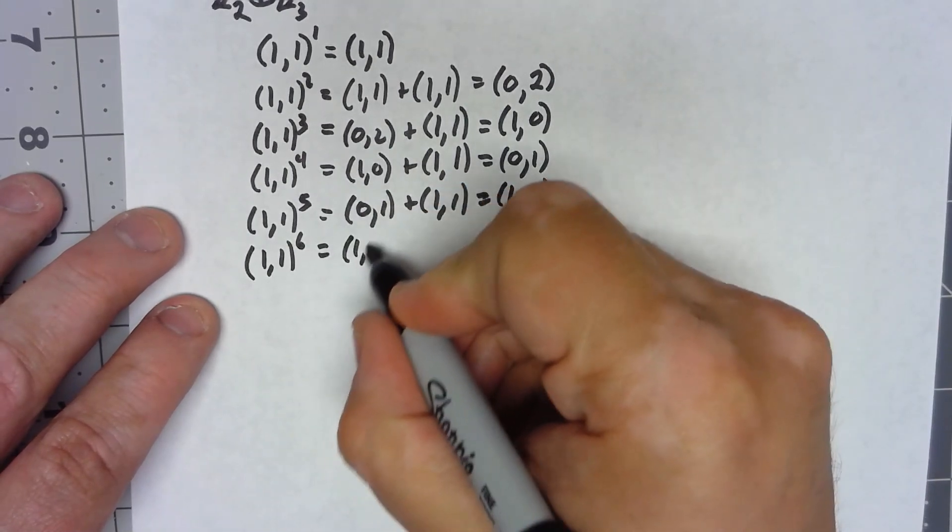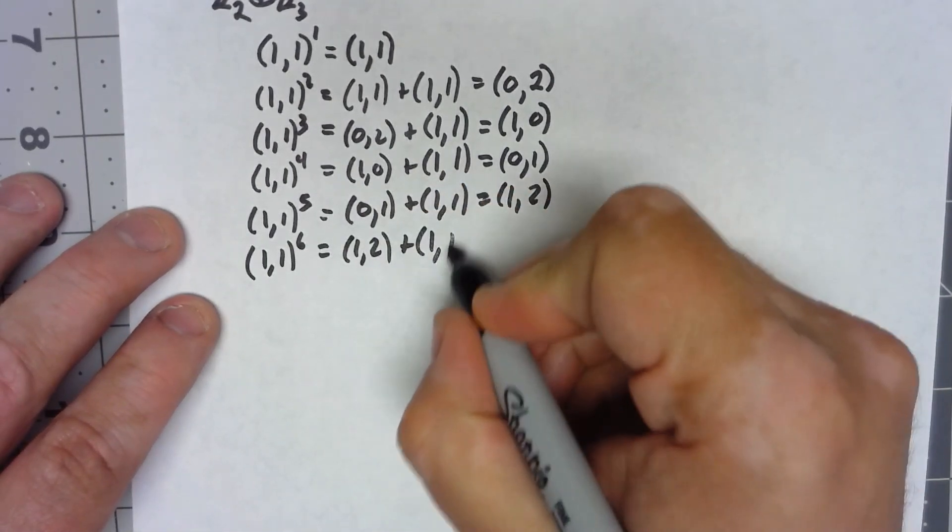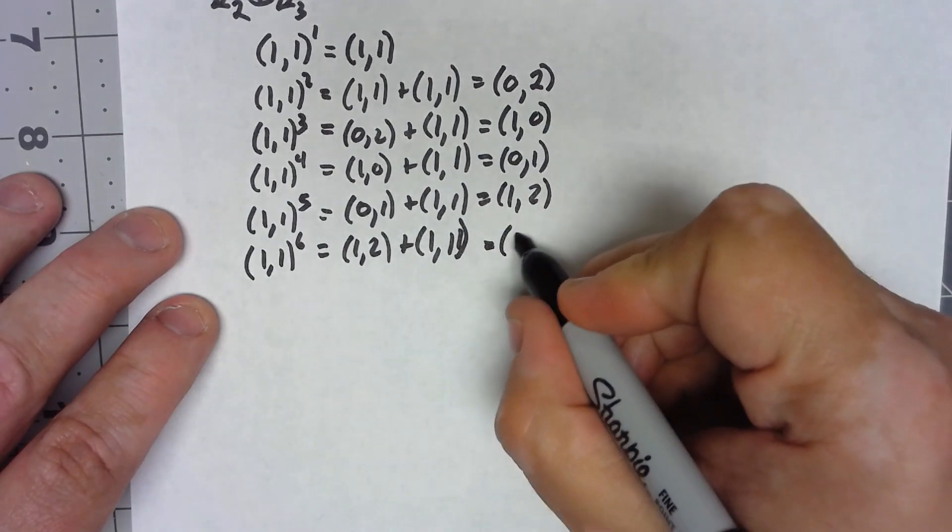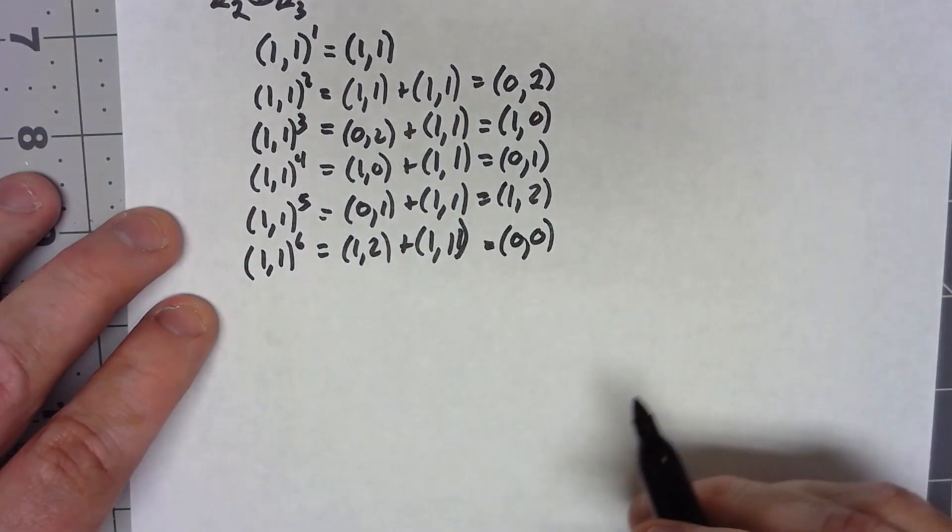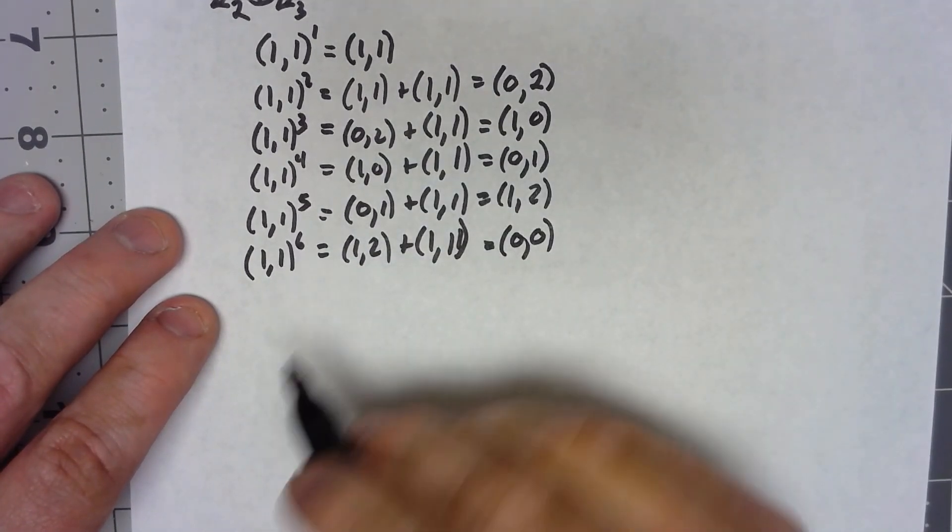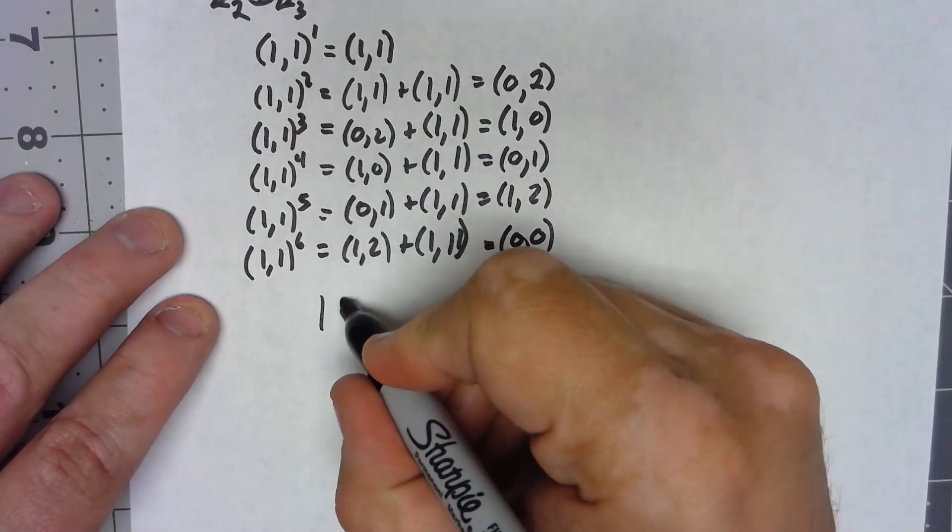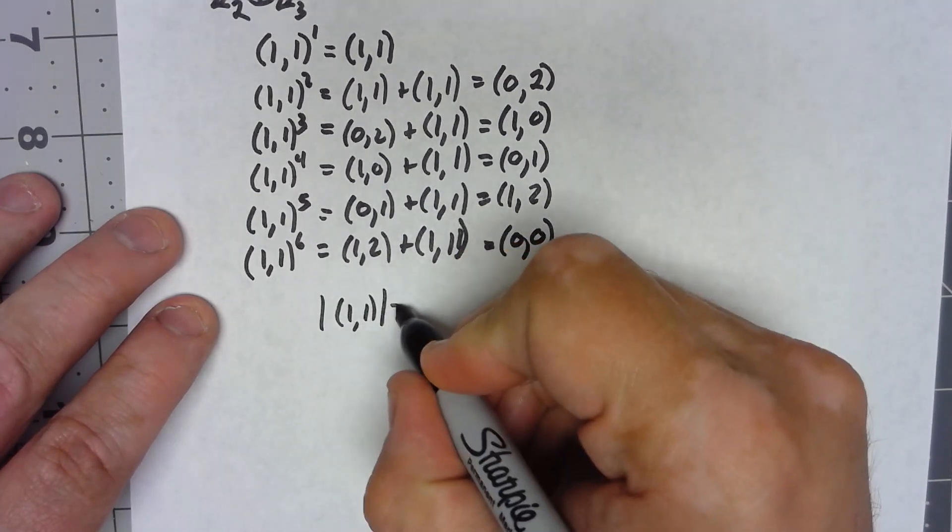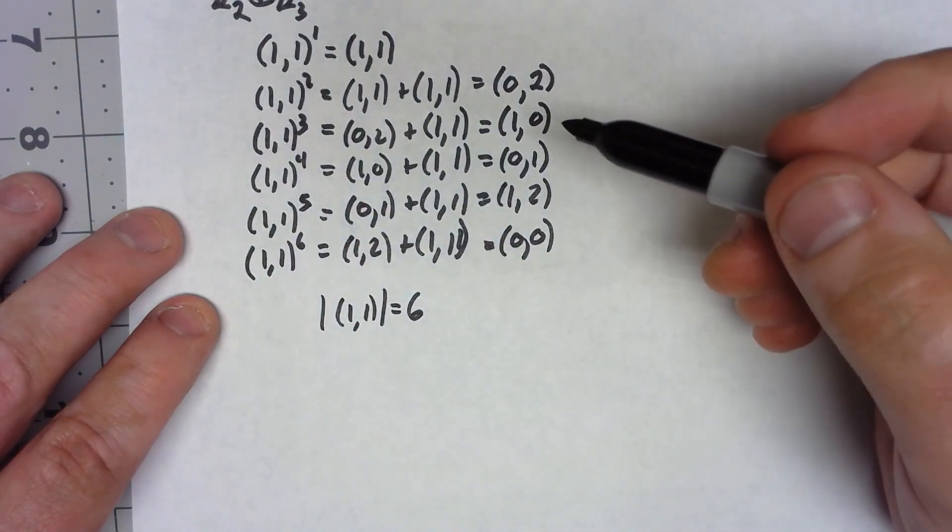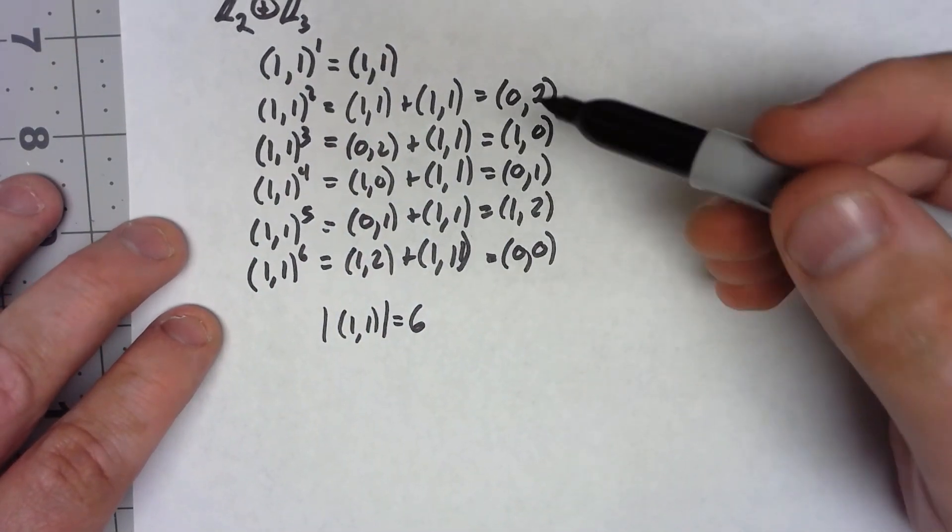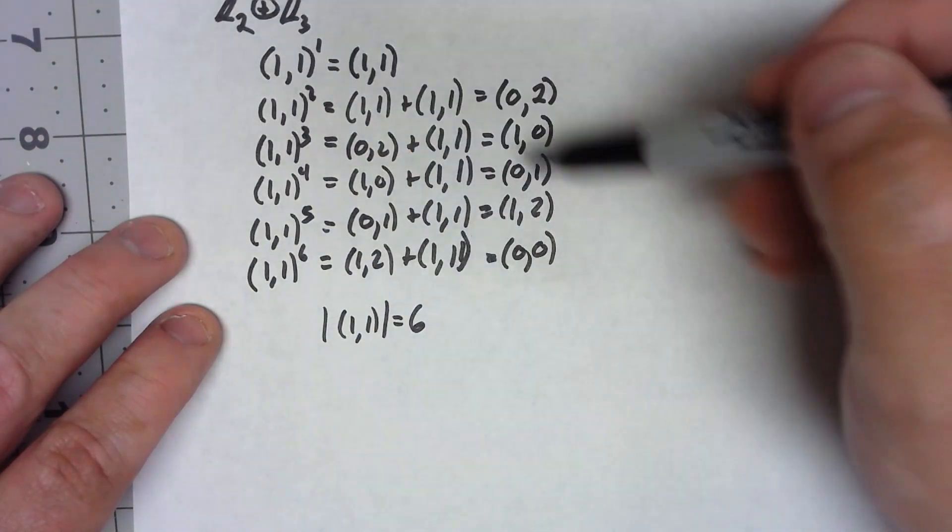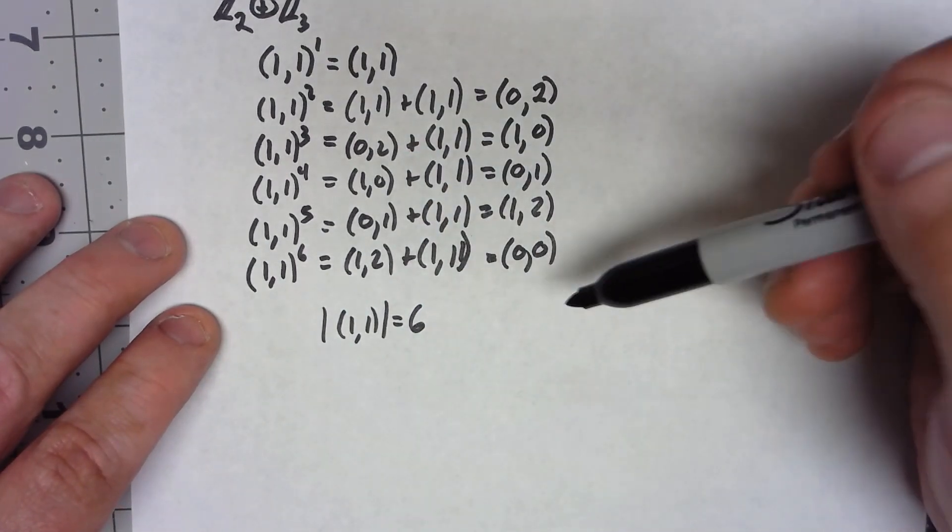(1,1) to the sixth: I take (1,2) plus (1,1) and that will give me (0,0). So there we go. The order of the element (1,1) is equal to 6, and in fact Z2 plus Z3 is a cyclic group because every element of Z2 plus Z3 was just generated.